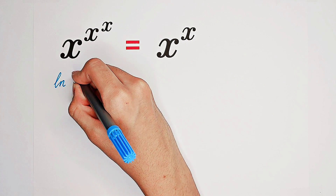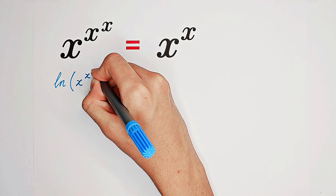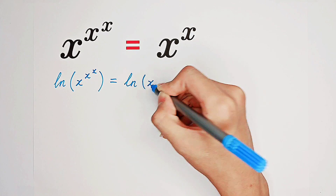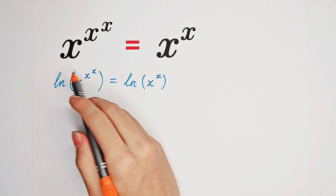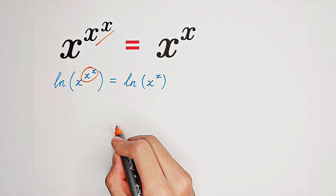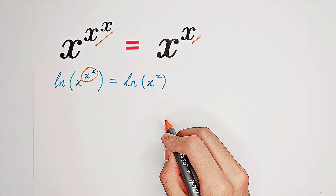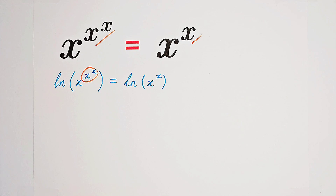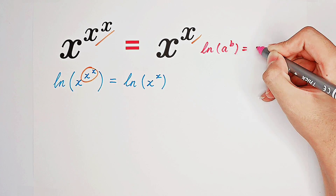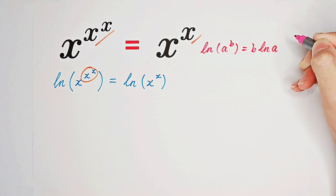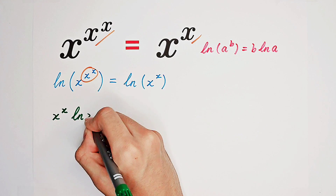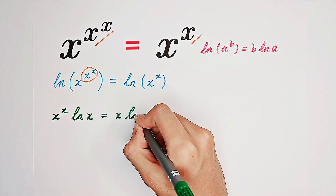On the left hand side it's the natural log of x to the power of x to the power of x, equals the natural log of x to the power of x. The exponent of our left hand side is x to the power of x, and the exponent of our right hand side is x. Using the formula — the natural log of a to the power of b equals b times the natural log of a — it becomes x to the power of x times the natural log of x equals x times the natural log of x.